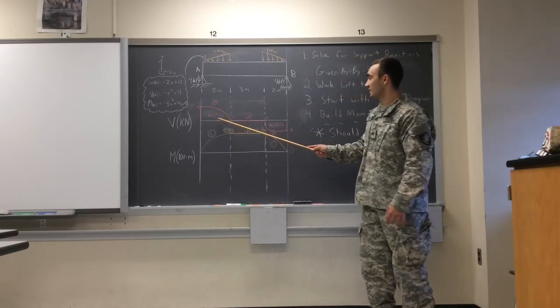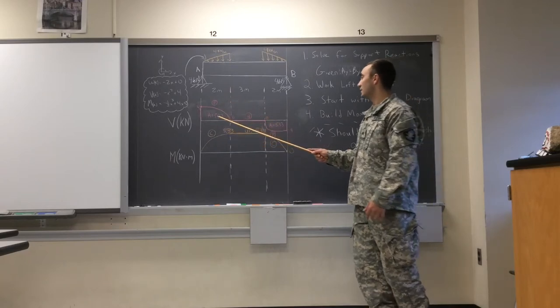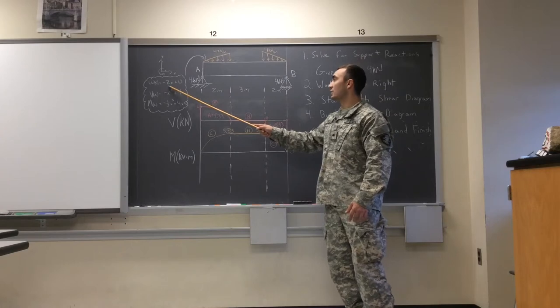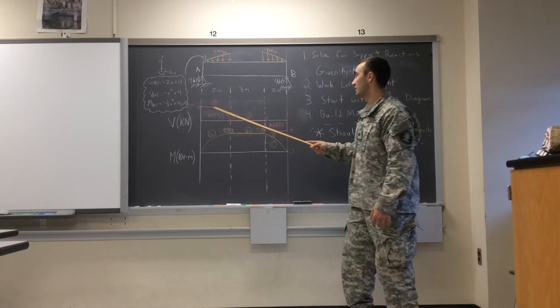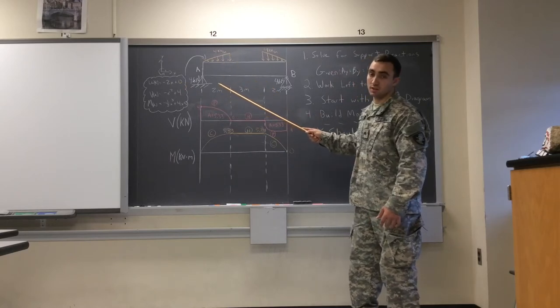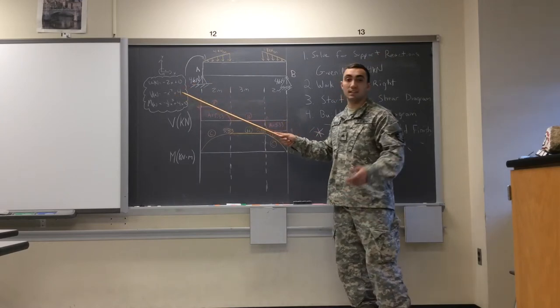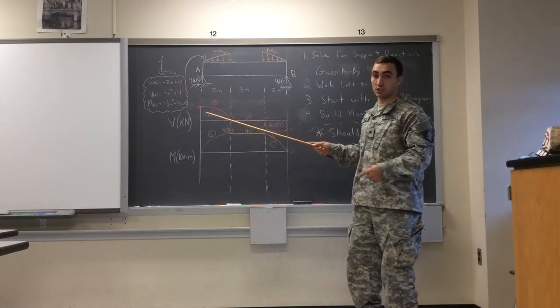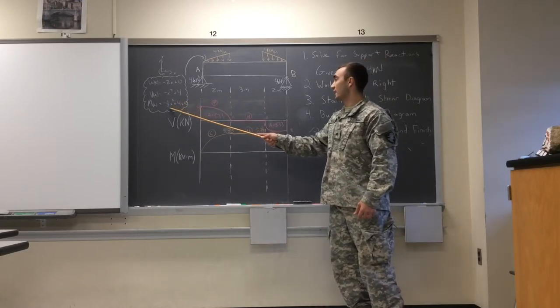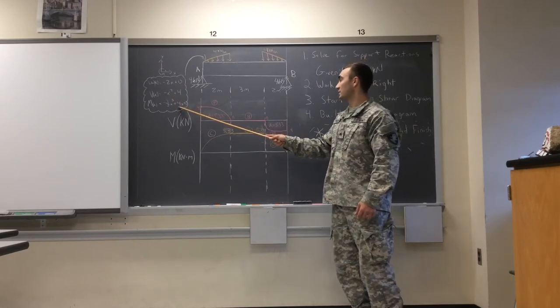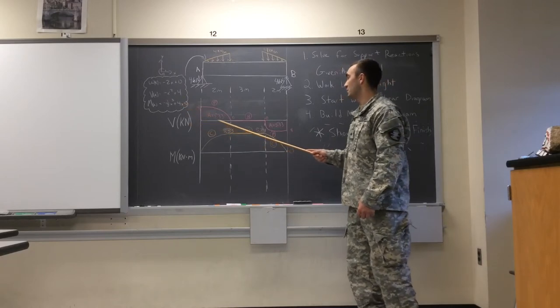We're going to move on to how we got this area right here, which you're going to need for the moment diagram later. What we did was we found out that the load, the slope of the load is going to be negative 2x. Because you're going to get 4 kilonewtons per meter over 2 meters, rise over run. So, you're going to get negative 2x. Then, what you're going to do is integrate this to get negative x squared plus 4 for the shear. And then, after that, you're going to go ahead and do that moment as well. So, you're going to get negative one-thirds x cubed plus 4x. So, once you have this, you can find out everything you need at that 2 meter point.